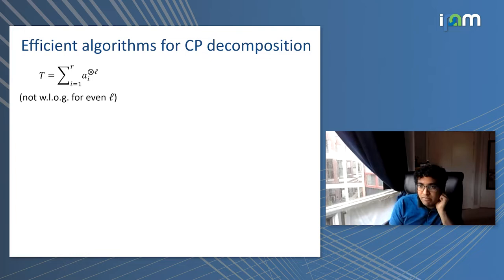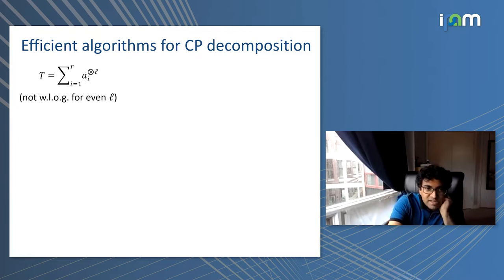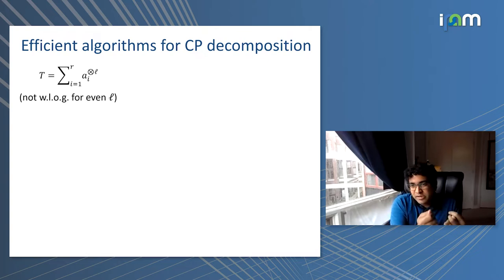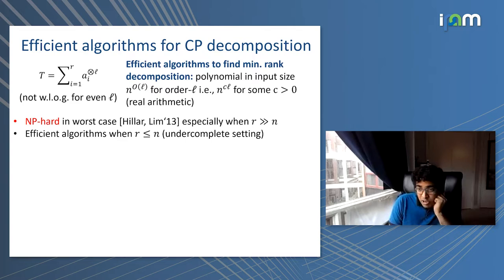For simplicity, I'll assume even for order-L tensors that it's a symmetric tensor with a rank-R decomposition written as a sum of a_i tensored L times. Note this is not without loss of generality for even L — for odd L it is. For even L, you'd also want a scalar that can take negative numbers, but many results hold in that case too. For this talk, we'll focus on the simpler setting.